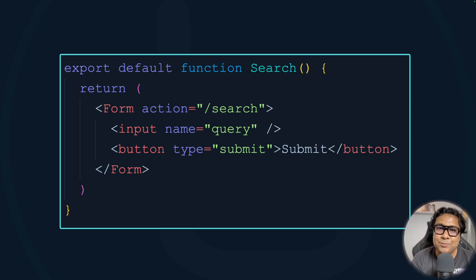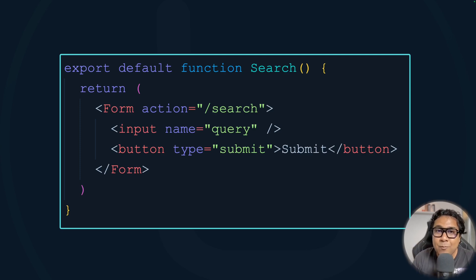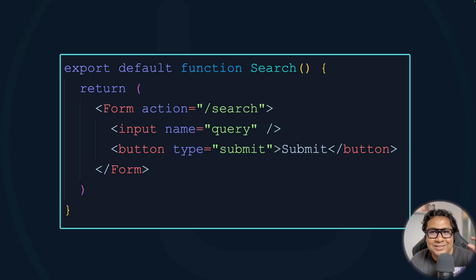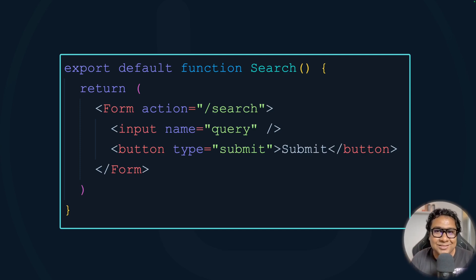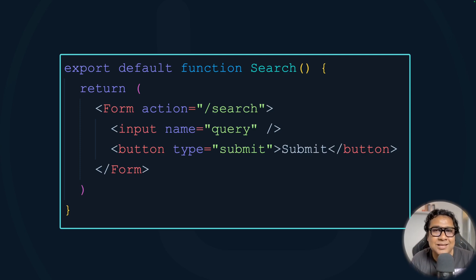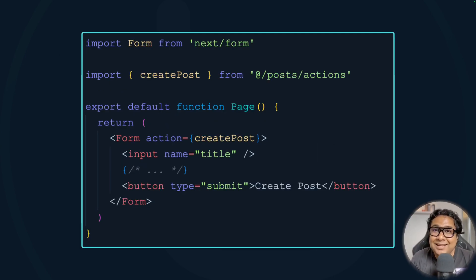This is the default HTML behavior, but Next.js sprinkles some magic on top of it. As the URL changes to '/search', Next.js performs its own client-side navigation to go to the new route. So if you have a search route with a page, you can land on that page and catch the query parameter to perform your own search. This power comes with the Form component and reduces a lot of code we'd otherwise be writing.